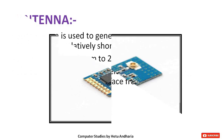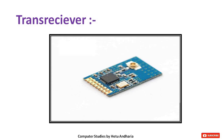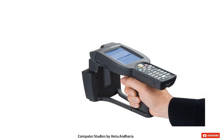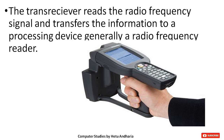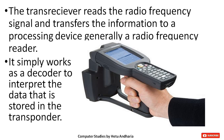The next component is the trans receiver — you can see the image of that small chip. The trans receiver reads the radio frequency signal and transfers the information to a processing device, generally a radio frequency reader. It simply works as a decoder to interpret the data that is stored in the transponder.